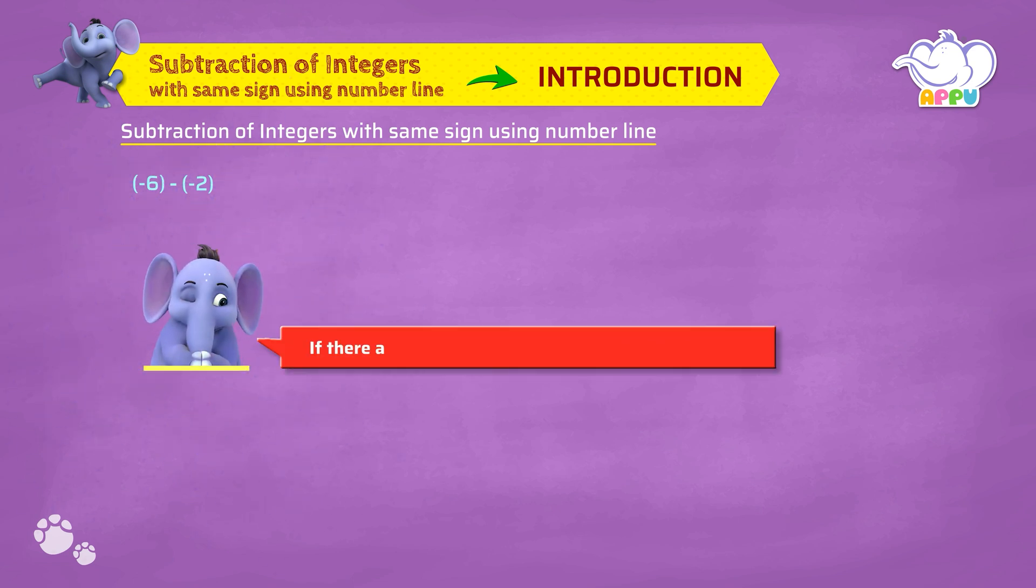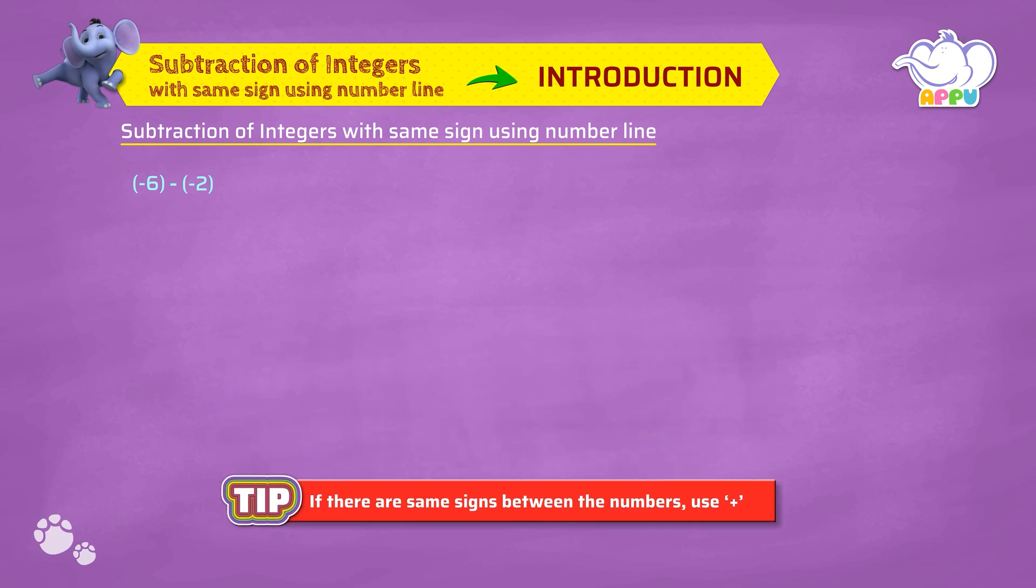If there are same signs between the numbers, use plus. We have same signs here, so this becomes minus 6 plus 2.